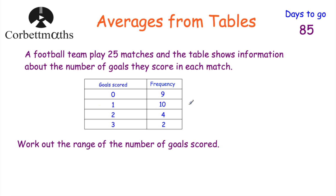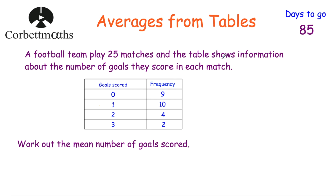Next, work out the range of the number of goals scored. The most goals scored in a match was 3 and the least was 0. Three minus zero equals 3, so the range of the number of goals scored is three.